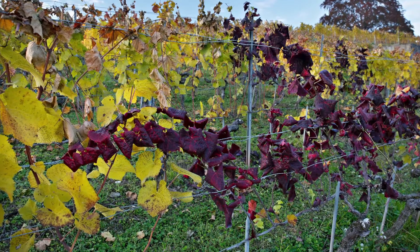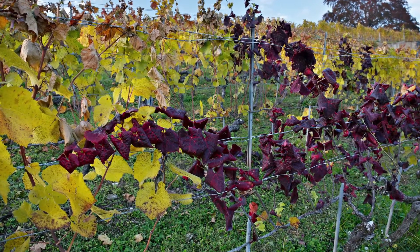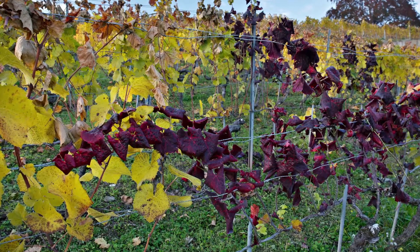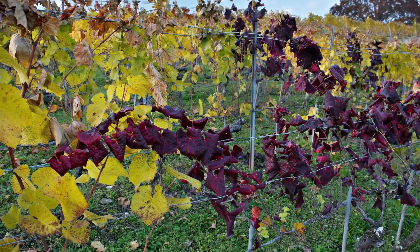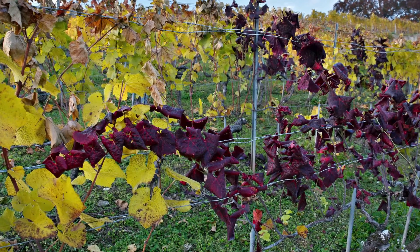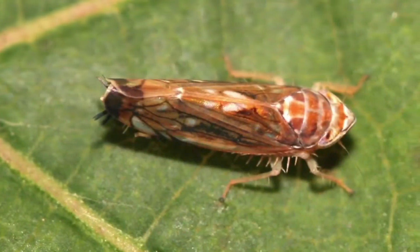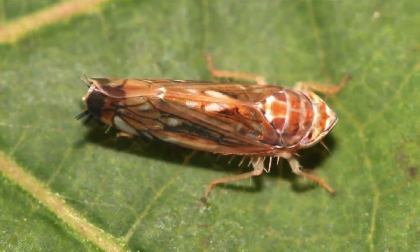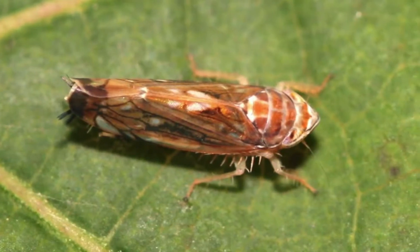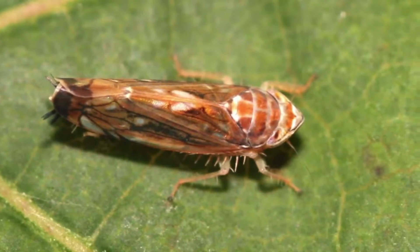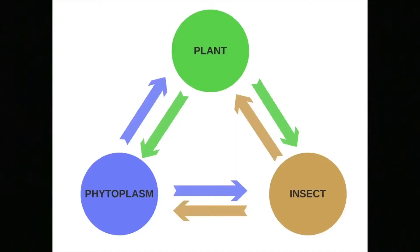Flavescence dorée is a disease caused by a phytoplasm transmitted vine to vine by an insect, a leafhopper named Scaphorideus titanus. The disease causes economic problems only if both the insect and the phytoplasm are present.